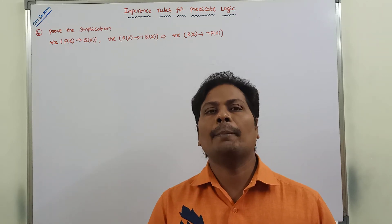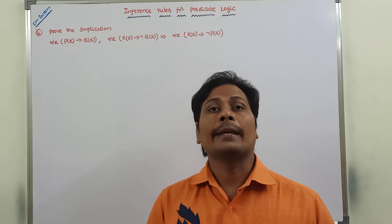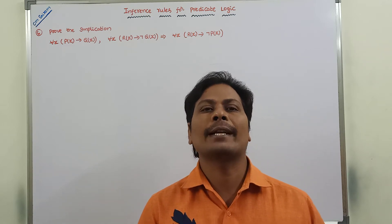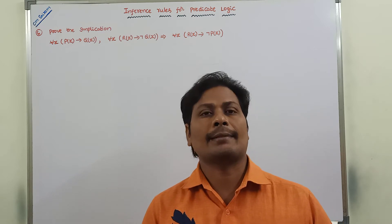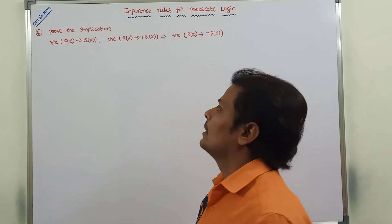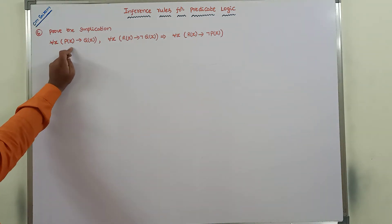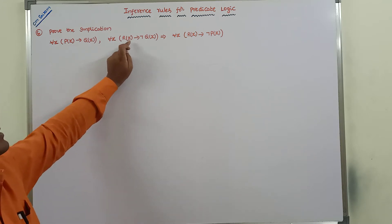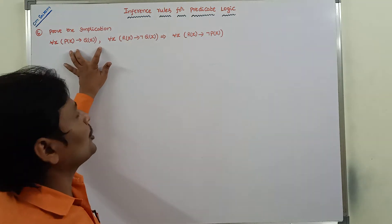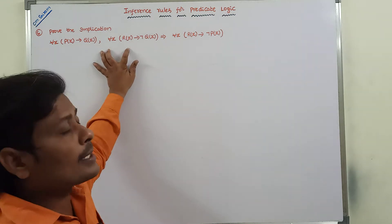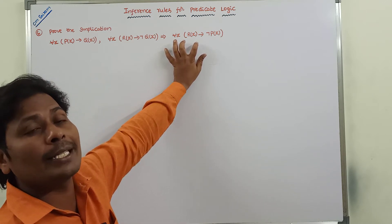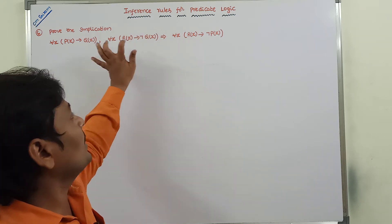Hi friends, today I am giving an example problem on inference rules. In the previous video we have already solved five example problems on inference rules — please refer to those problems for better understanding. Now in this video we have to solve another example problem. We need to prove the implication: for all x, p(x) → q(x), and for all x, r(x) → ¬q(x), implies for all x, r(x) → ¬p(x). These are the two given premises from which we have to derive this conclusion.